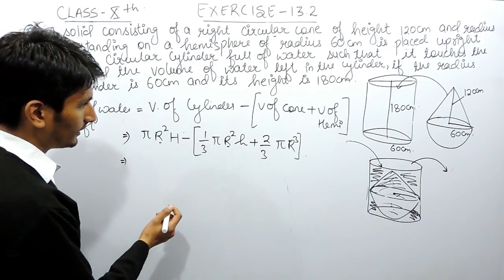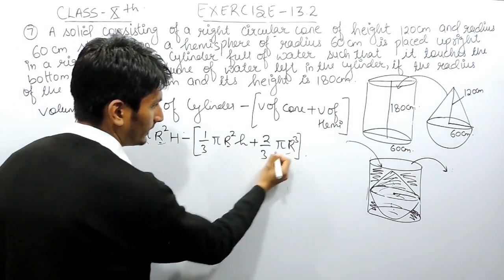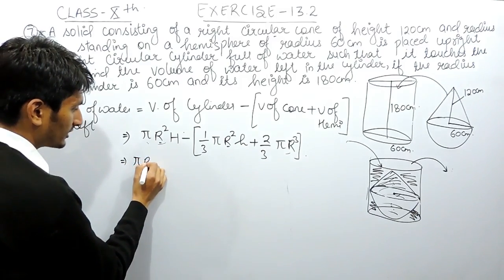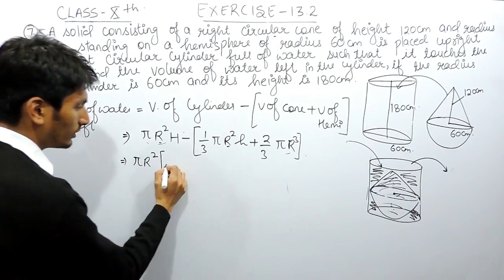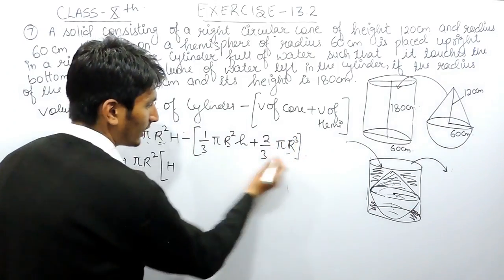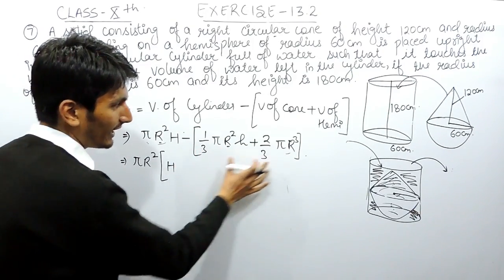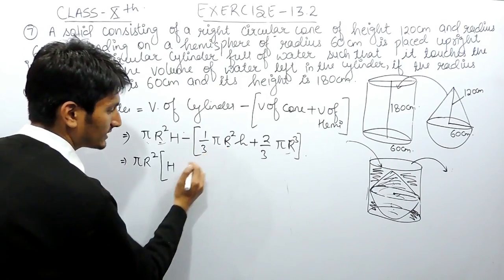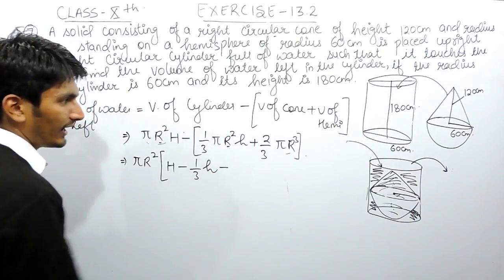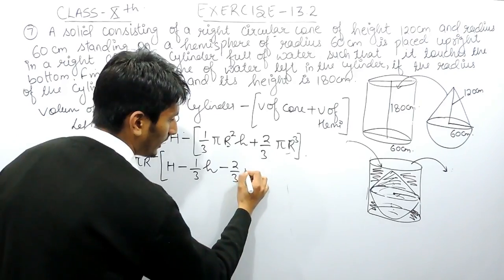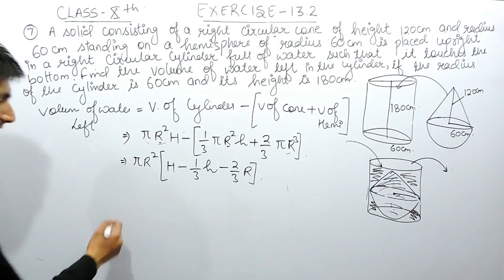We can take π r² as common from all terms. Inside the bracket, h remains from the cylinder term. There is a negative sign outside the bracket for the cone and hemisphere terms, so the signs inside change: minus (1/3)h remains from the cone, and minus (2/3)r remains from the hemisphere term, since when r² is factored out of r³, only r remains inside the bracket.